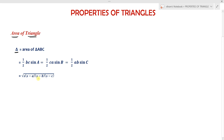The area of a triangle also equals the square root of S times (S minus a) times (S minus b) times (S minus c), where small a, small b, and small c are lengths of the sides of the triangle, and S is the semi-perimeter where S equals (a plus b plus c) divided by 2.